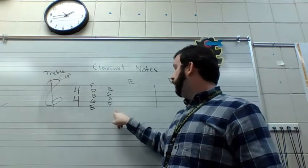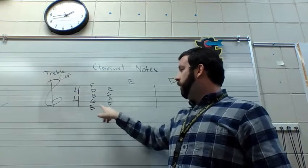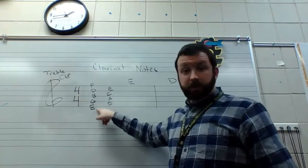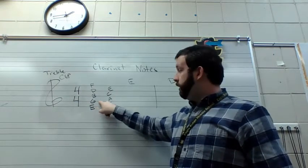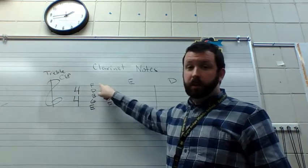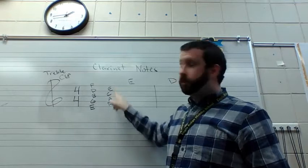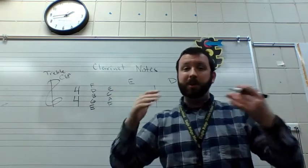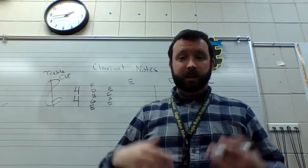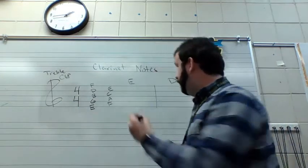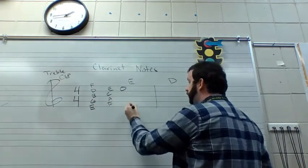One is on a line and one is on a space. One is the first word of 'Every Good Burger Deserves Fries,' and the other is the last letter of FACE. So how do we know which one our note E is—if it's this space or if it's this line?